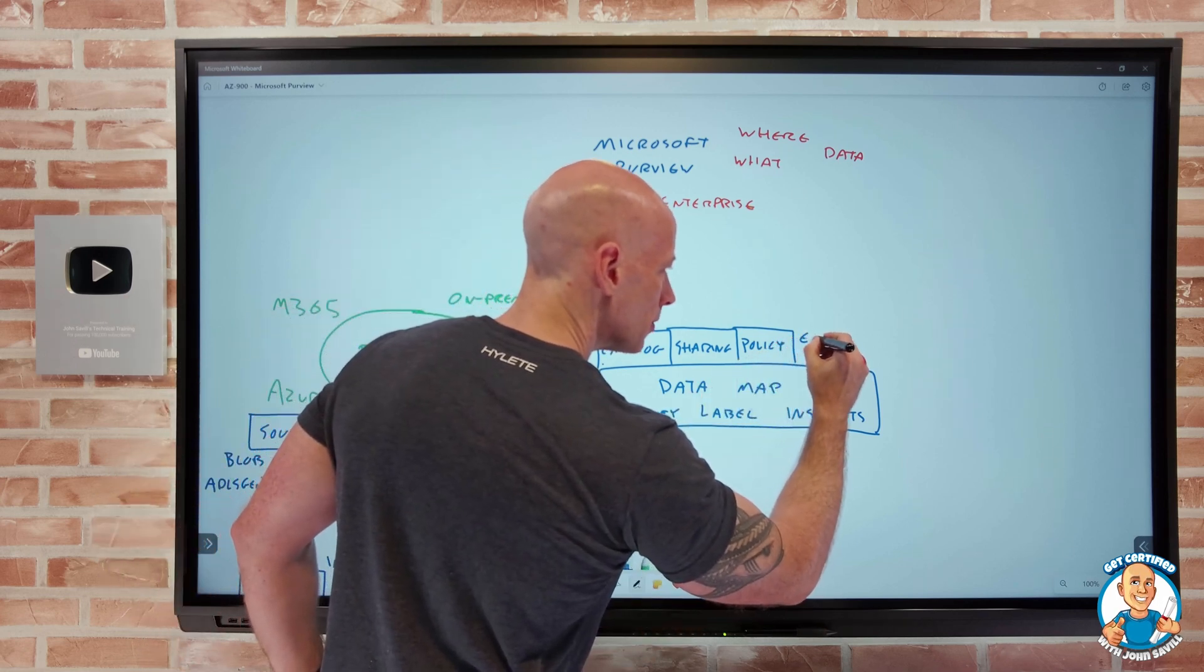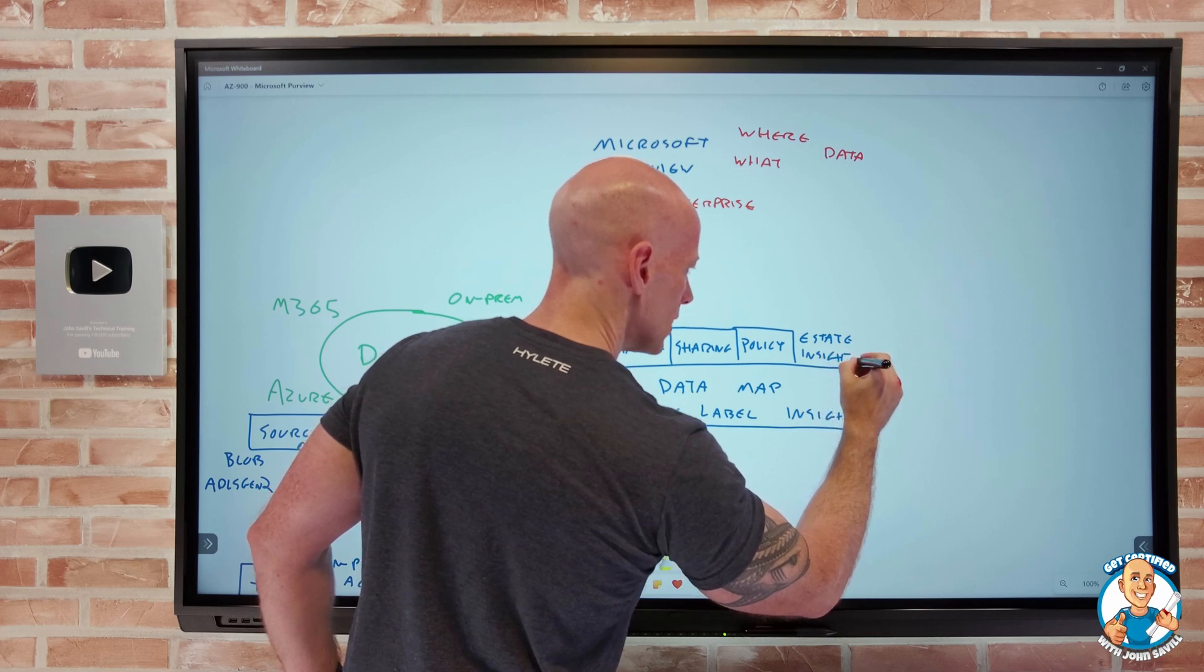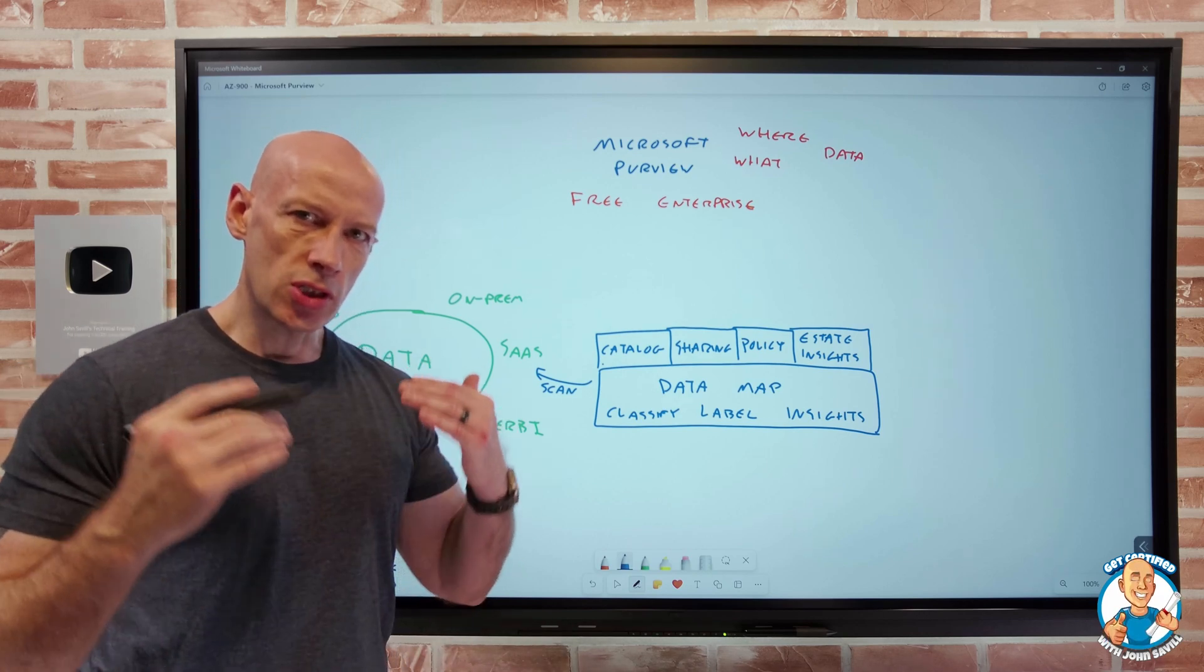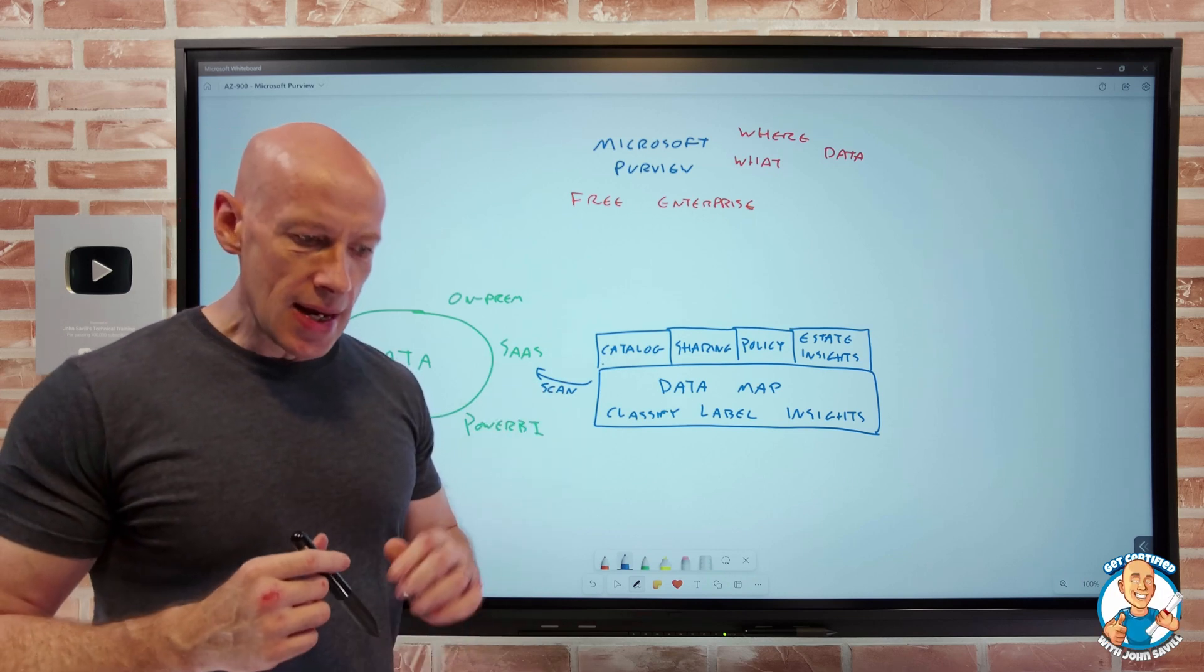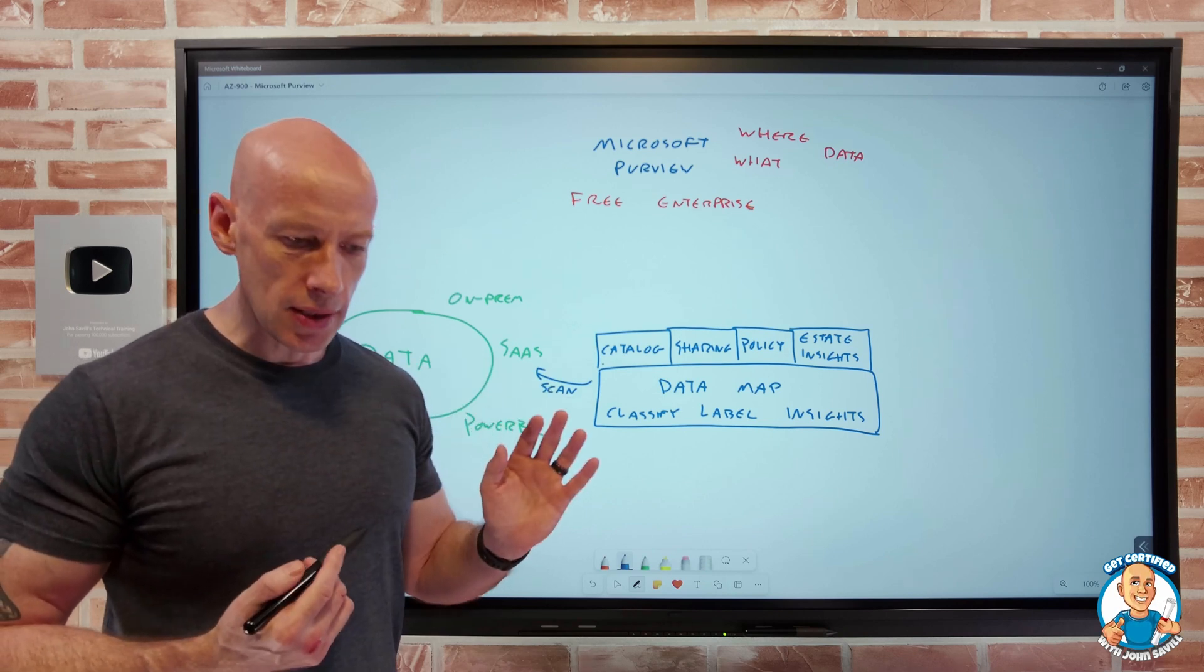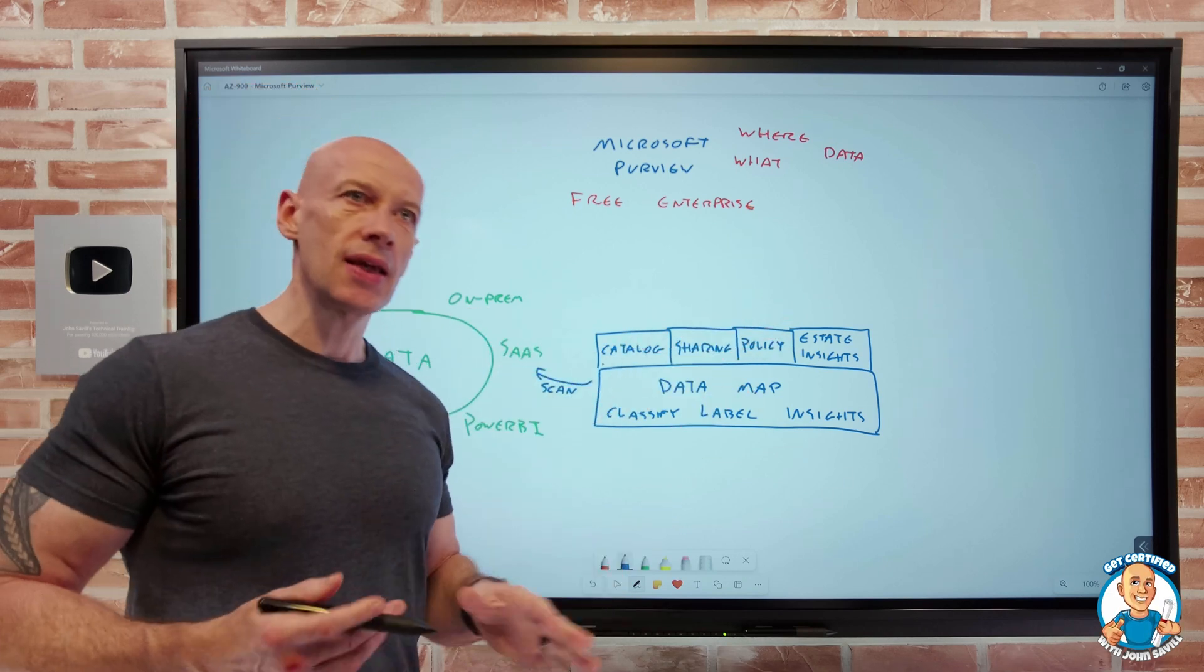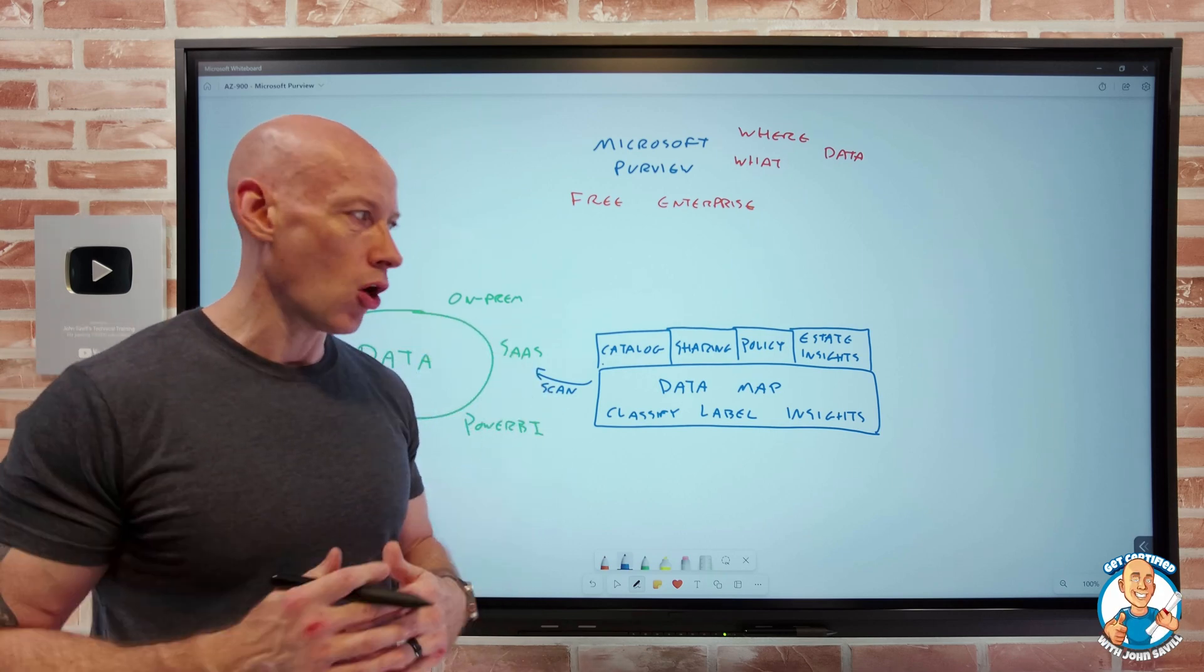And the final thing is estate insights. Now, I can think of this for the main governance stakeholders, maybe your C-level executives. And it's giving me insight into the entire data estate, my compliance. It's going to give me actionable information that here's where I have maybe sensitive data, here's how it's being used, do I want to drive some type of operation on that?